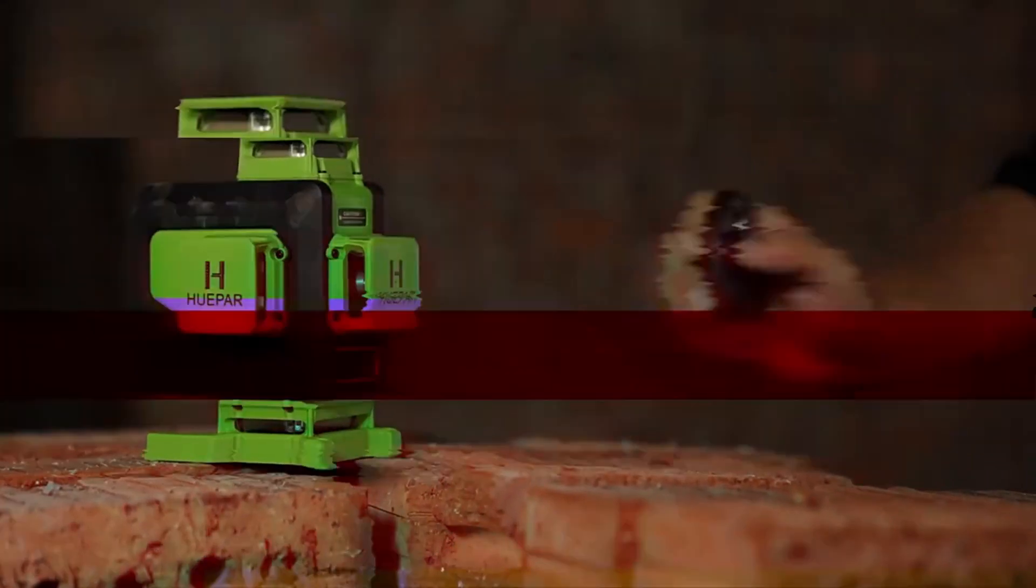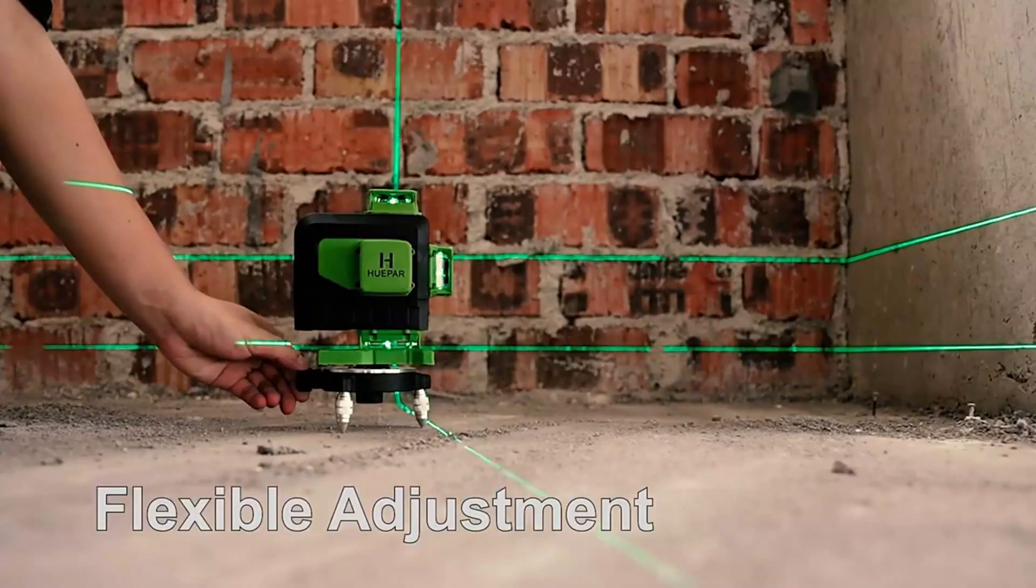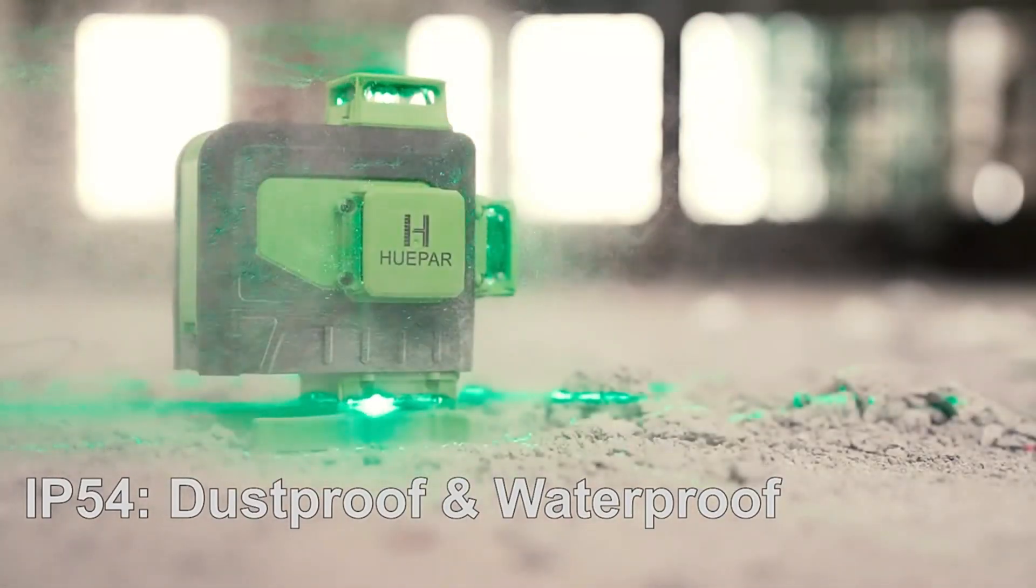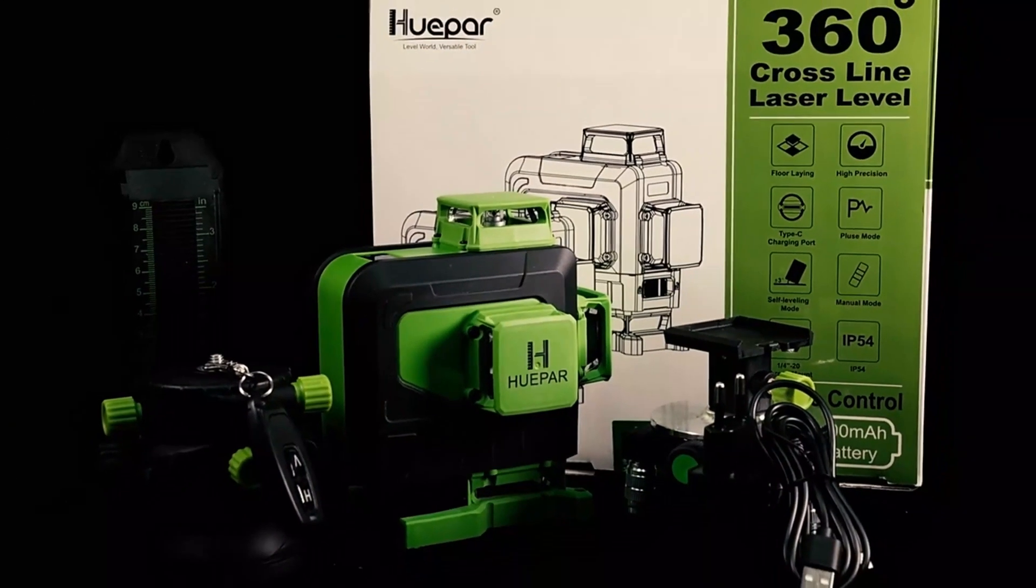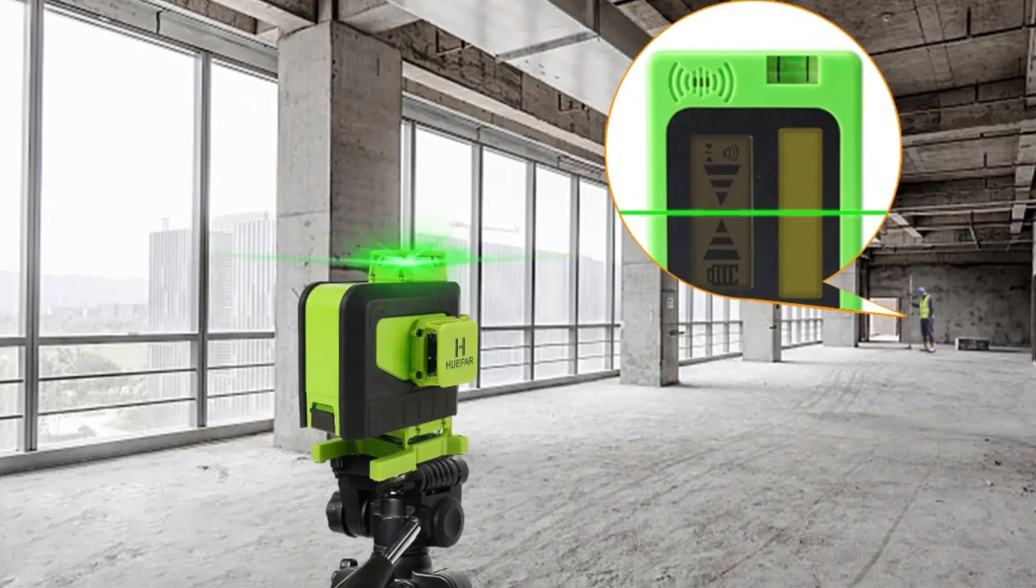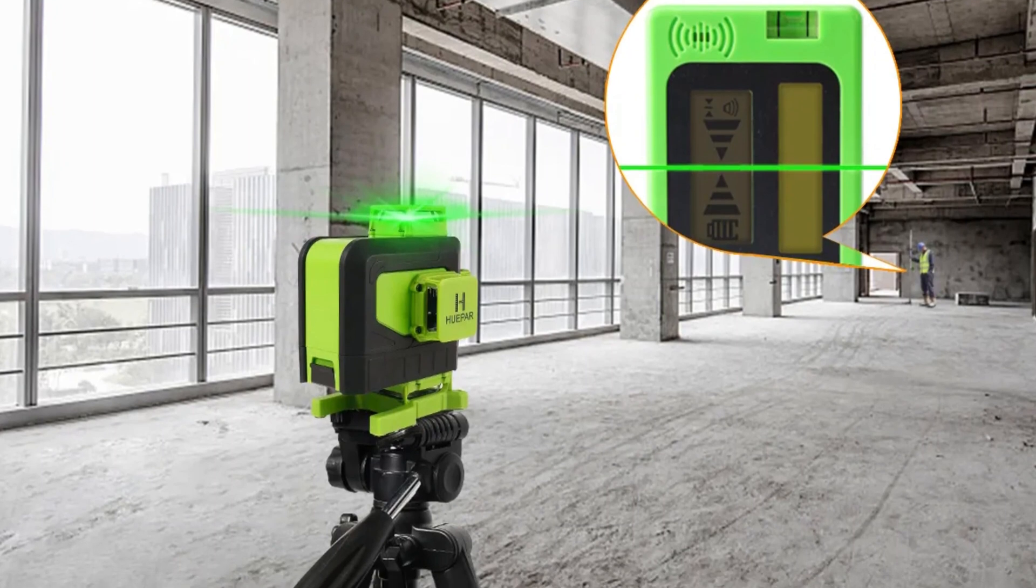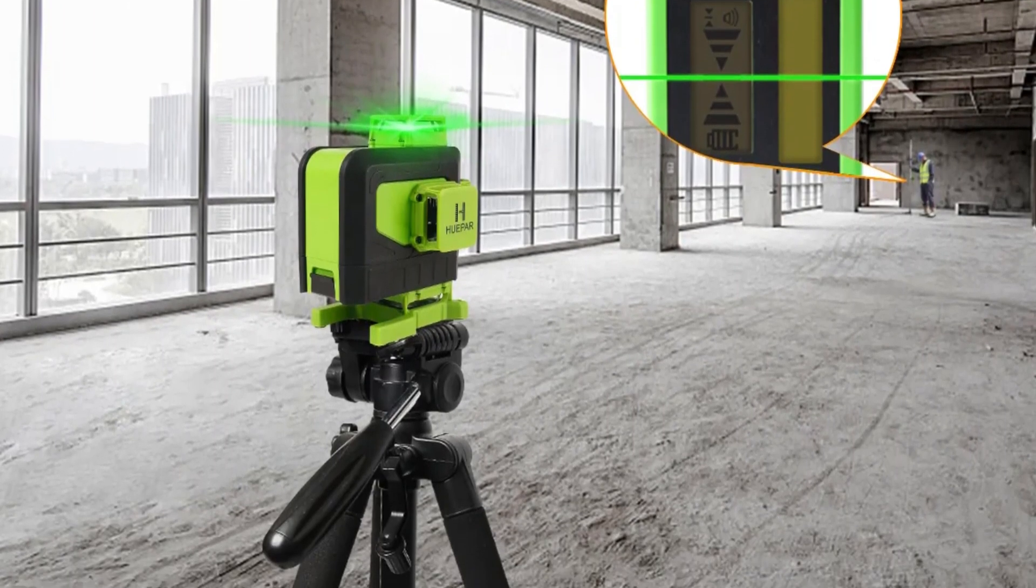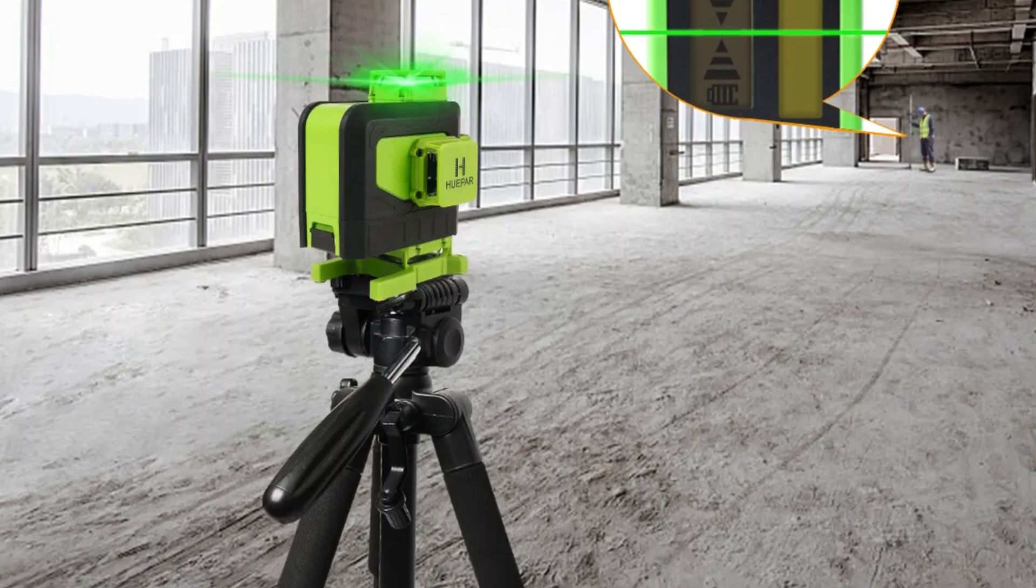It features a German-made laser wavelength, ensuring a bright, crisp green beam, even in well-lit environments. The 16-line measurement model provides comprehensive coverage for both vertical and horizontal measurements, making it suitable for various tasks. The 904DG has a working distance of 40 meters, 132 feet, and can be used with a detector for even greater distances.